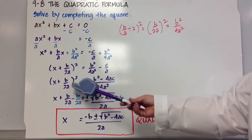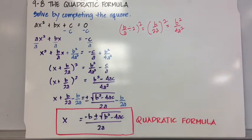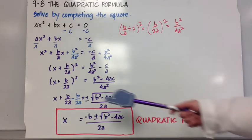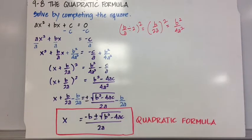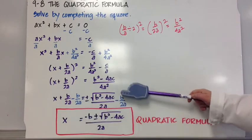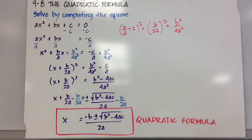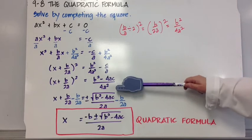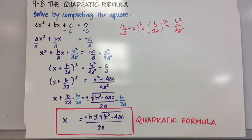So now I have the quantity x plus b over 2a squared equal to b squared minus 4ac all over 4a squared. And here's my perfect square. So I'm going to take the square root of both sides, and that results in x plus b over 2a equals plus or minus the square root of b squared minus 4ac over 4a squared. And of course 4a squared is a perfect square, so that simplifies to 2a.